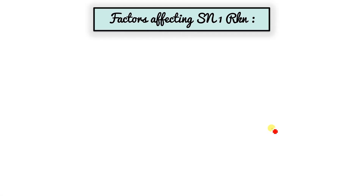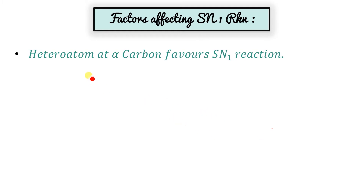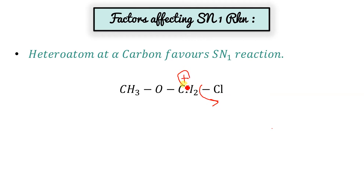Heteroatom at the alpha carbon favors SN1 reaction. If the leaving group moves out and a carbocation forms, this carbocation is stabilized due to backbonding — oxygen having a lone pair of electrons easily stabilizes it through backbonding. I have uploaded a video for backbonding. That's why this favors the SN1 reaction.